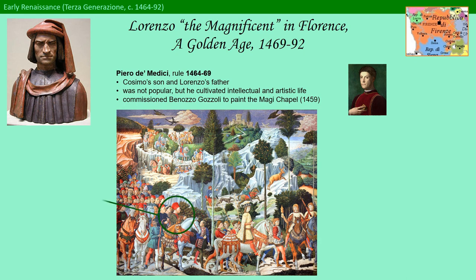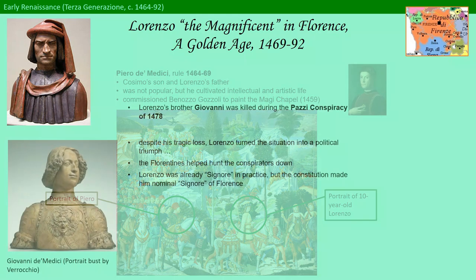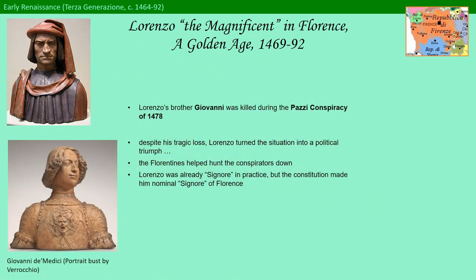You'll remember that it glorified the Medici family by embedding portraits of them in an otherwise religious narrative related to Jesus' birth. Lorenzo came to power in 1469 at the tender age of 20. Although he took a more moderate approach, political factions remained, and enemies of the family wished to see its young leading members dead. Indeed, his brother Giovanni was killed during the Pazzi Conspiracy of 1478 that also targeted Lorenzo's life.